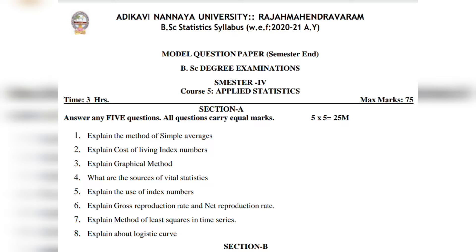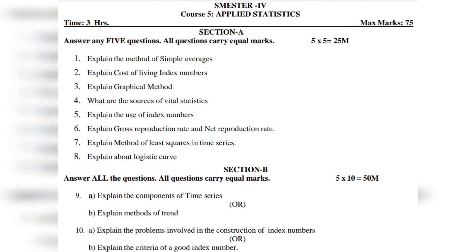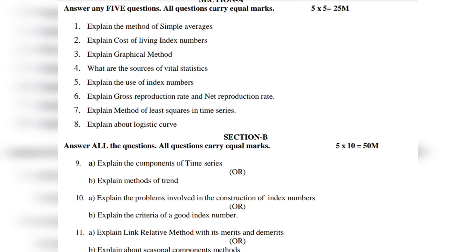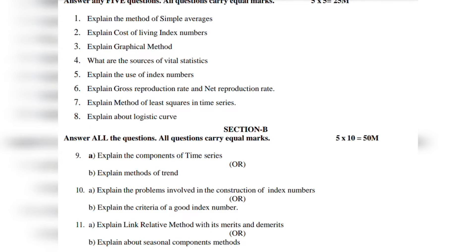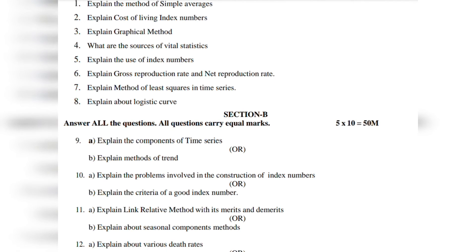So, iwa aya tēn shorts, aya kēnī wāl lāhi tēn, yokkā paper fālō yikūdh, mīr pāsū vācchū. First aya tēn, ninth aya tēn: explain the components of time series, explain methods of trend. Tenth: explain the problems involved in the construction of index numbers. Tenth b: explain the criteria of a good index number. Eleventh a: explain link relative method with its merits and demerits. Eleventh b: explain about seasonal components method.